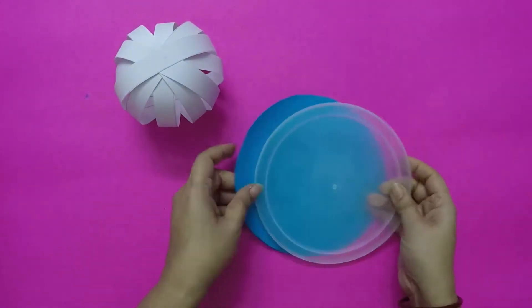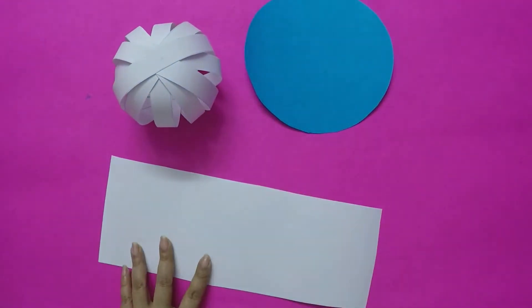Now take the blue paper and cut out a circle like this.